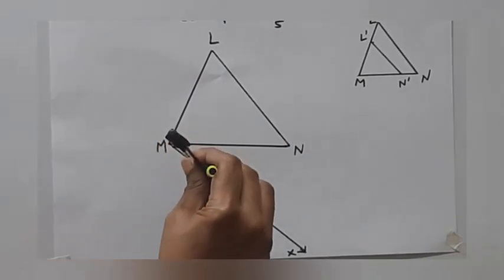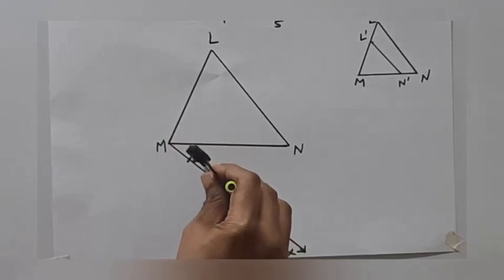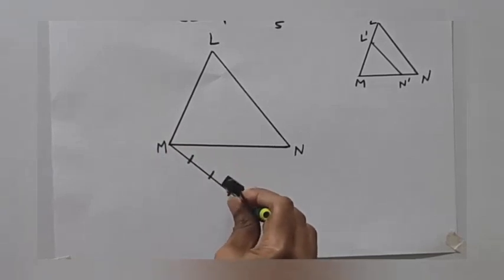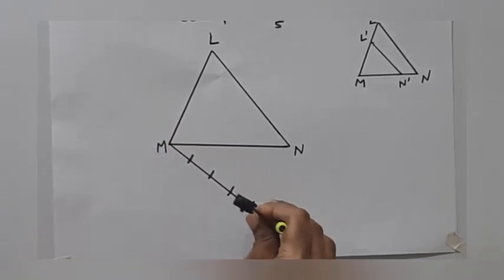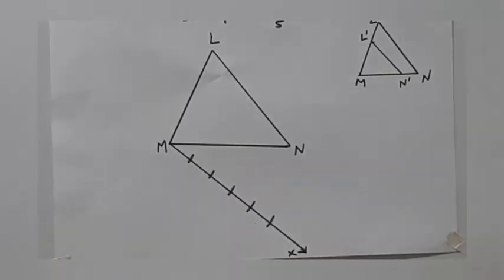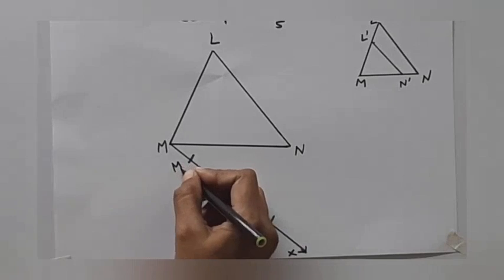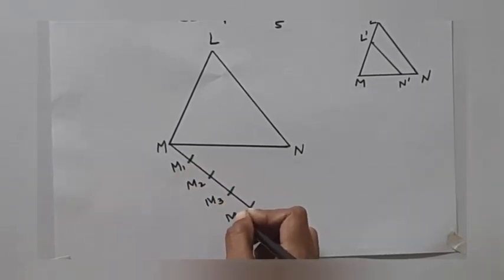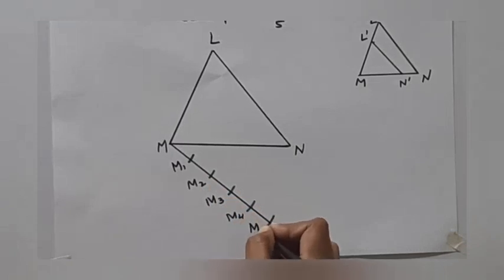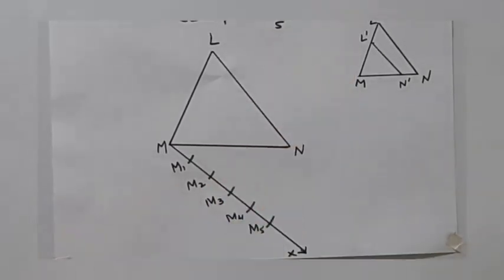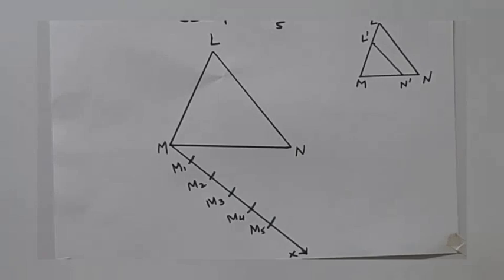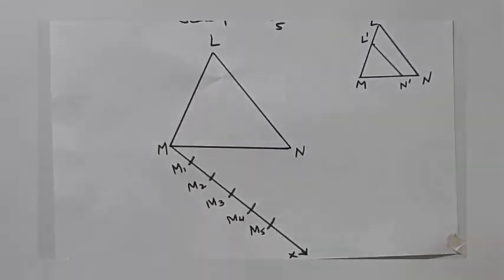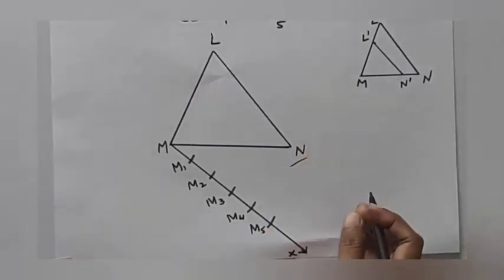1, 2, 3, 4, 5. 5 arc. M1, M2, M3, M4, M5. Denominator 5. Denominator 5. Denominator 5.